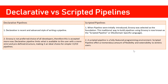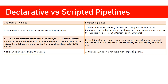Groovy is not preferred by all developers — some use Python, some use Java — so declarative pipelines, which have a defined set of directives, are more of a favorite for developers who are not into Groovy. On the other hand, scripted pipelines give you a lot of flexibility because they come with the power of the entire Groovy language, making them more powerful. One important thing to note is that in declarative pipelines you can have script blocks containing scripted syntaxes, but in scripted pipelines you cannot use declarative directives.